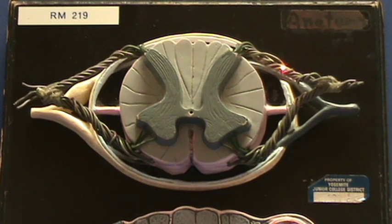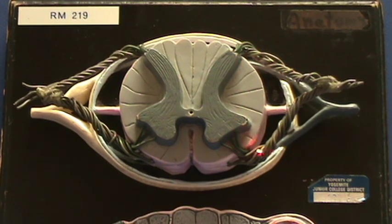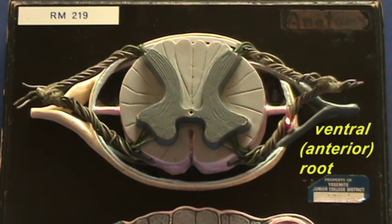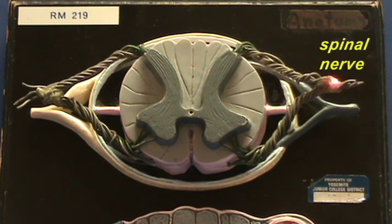This is your dorsal or posterior root carrying sensory information into the spinal cord. Here is your anterior root carrying motor commands along motor neurons, and the posterior and ventral roots will join with one another to form the spinal nerve, which you see right over here.